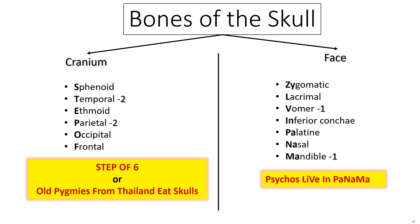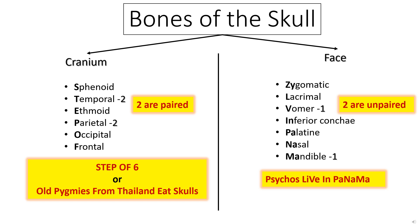There are two paired bones in the cranium. Opposite to that, there are two unpaired bones in the face, which means other bones of the cranium are unpaired and other bones of the face are paired.